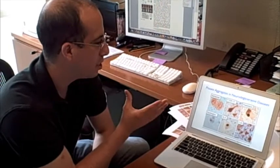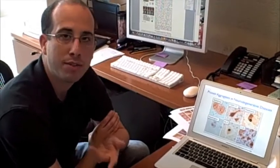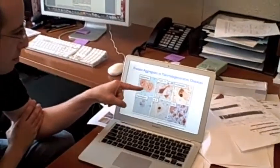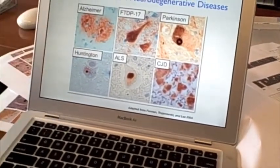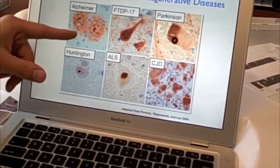Proteins aggregate and accumulate in the brains of patients with these diseases, and these proteins can accumulate outside of neurons, like in Alzheimer's disease, these plaques of a protein called amyloid beta accumulate in the brains, and this is outside of neurons.